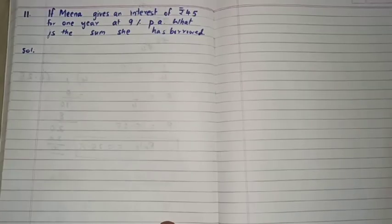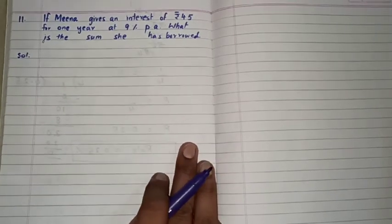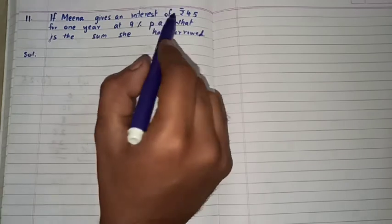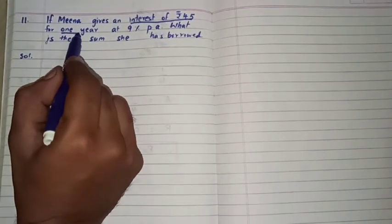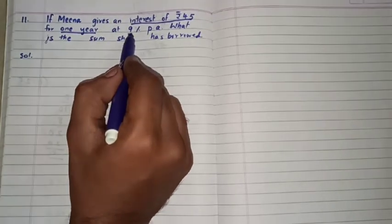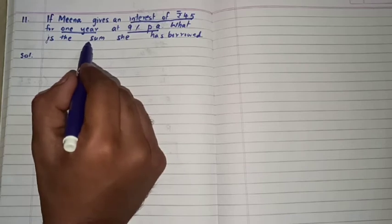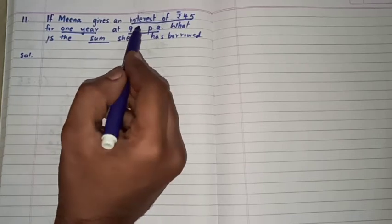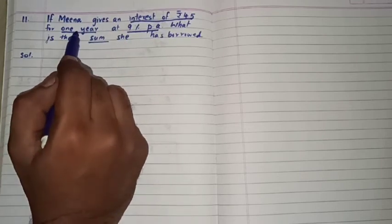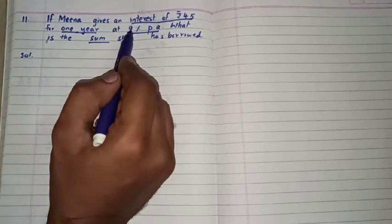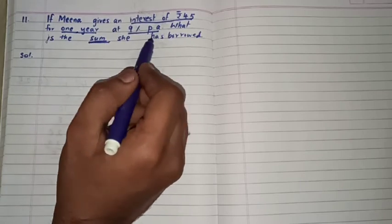Let us solve the eleventh question, the last problem of this chapter. If Meena gives an interest of rupees 45 for one year at 9 percent per annum, what is the sum she has borrowed? To yahaan par hamaare paas kuch values hai jisai interest ki value hai 45, time ka value hai one year and rate ka value in 9. To humko pata karna hai what is the amount of money she has borrowed, yani jitne paise is now borrowed ki it kitne hai, that means hama ko yahaan par principle pata karna hai.